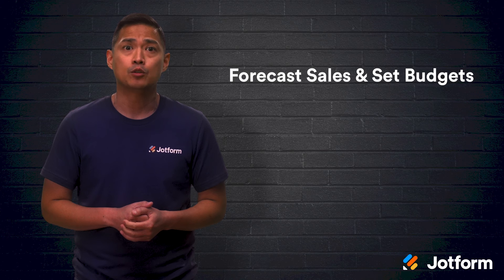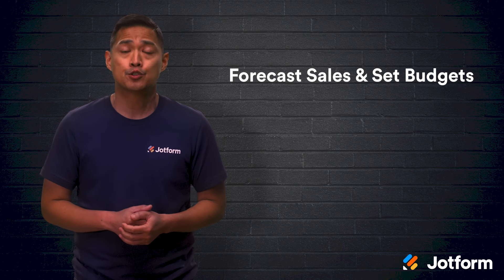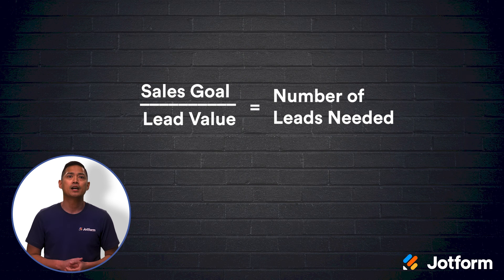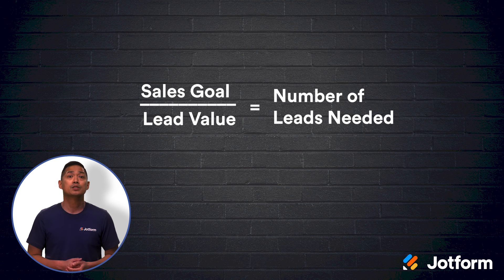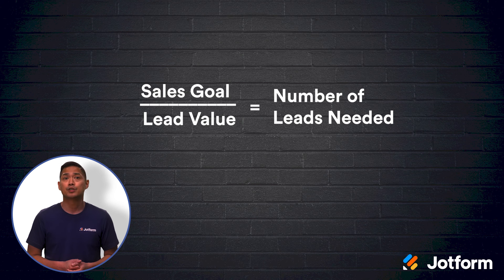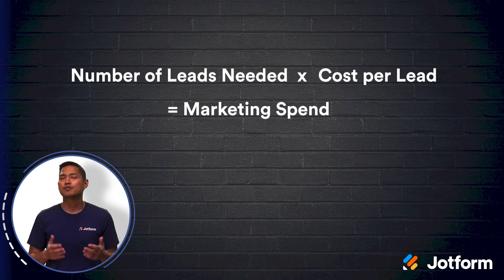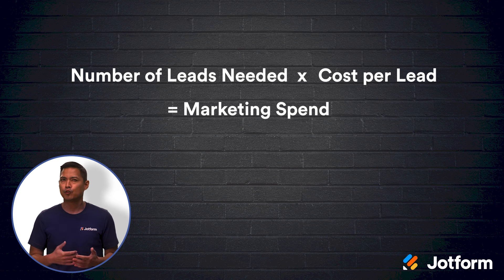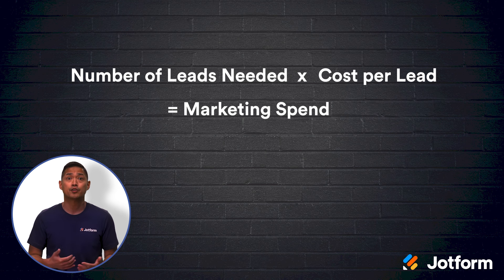Now that you've figured out all your important lead value and conversion rate data, you can project future revenue. Doing so will allow you to set appropriate marketing budgets that achieve your new sales goals. Say you made $1,500 from your first online course and you want to make $3,000 on your next one. The formula to calculate what's needed is: sales goal divided by lead value. You can estimate that you'll need 40 leads to reach a sales goal of $3,000, which falls in line with your current conversion rate of 50%. To set an appropriate marketing budget, take the number of leads needed times the cost per lead. If you need 40 leads and previously spent $5 to acquire each lead, then you should budget $200 for Facebook ads for your next online course.